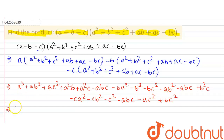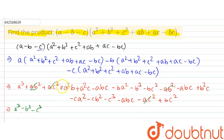Now I will arrange the expression in order. We have: a cube, minus b cube, minus c cube. Then ab square and minus ab square cancel. ac square and minus ac square cancel. a square b and minus a square b cancel. a square c and minus a square c cancel. bc square minus bc square cancels, and b square c minus b square c also cancels.